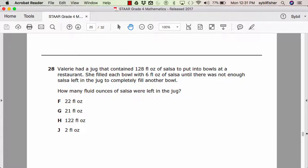Valerie had a jug that contained 128 fluid ounces of salsa to put into bowls at a restaurant. She filled each bowl with six fluid ounces of salsa until there was not enough salsa left in the jug to completely fill another bowl. How many fluid ounces of salsa were left in the jug?